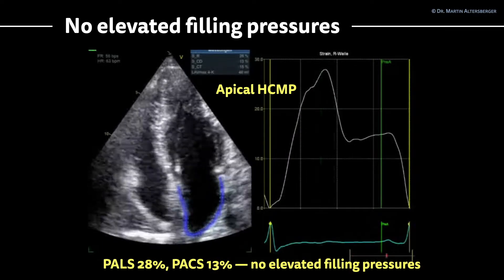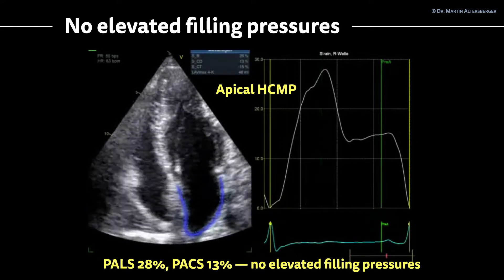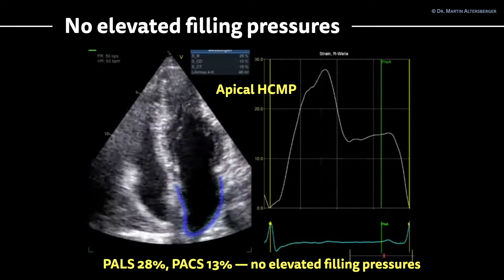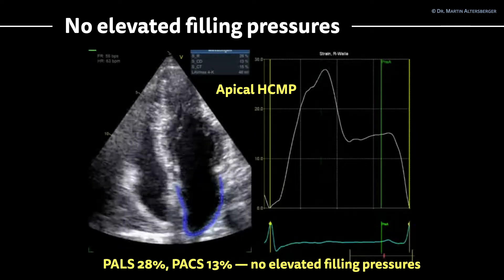Let's take a look at a patient. In this patient, we have a situation of apical hypertrophic cardiomyopathy. This patient was somewhat symptomatic and now it was time to identify if there are elevated filling pressures likely. In this case, we do see two measurements. We see the PALS, which is approximately 28%, and the PaX, 13%, which denotes in this case a likelihood that there are no elevated filling pressures.